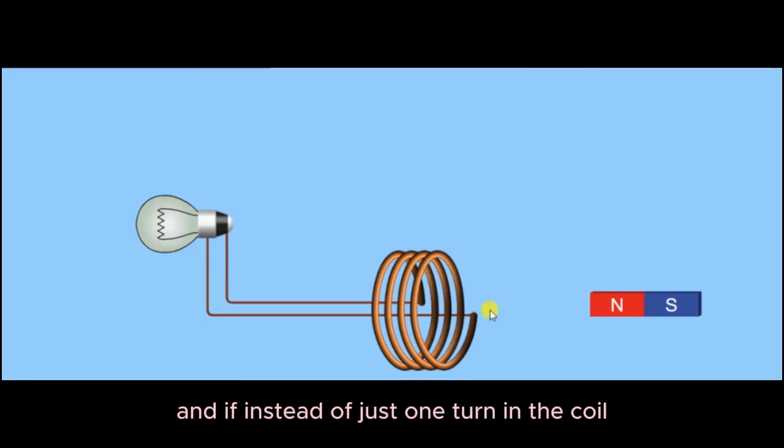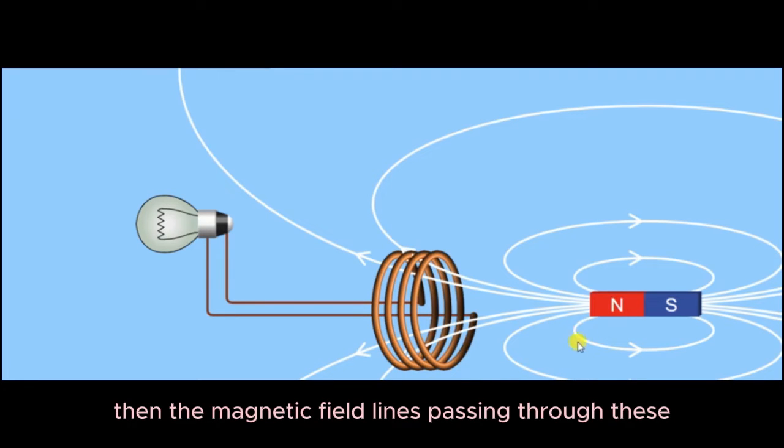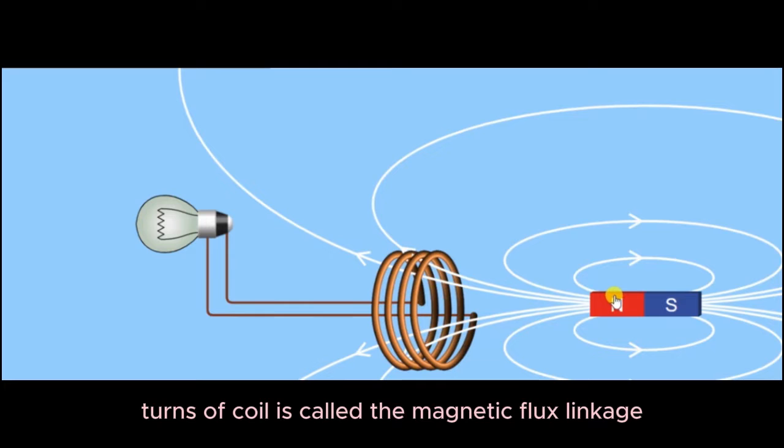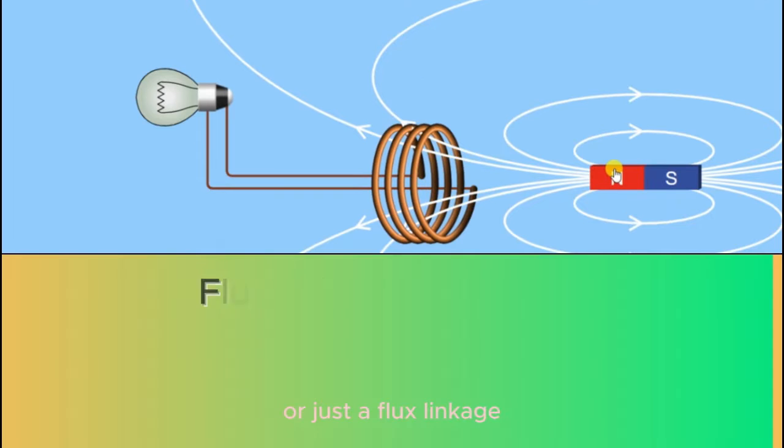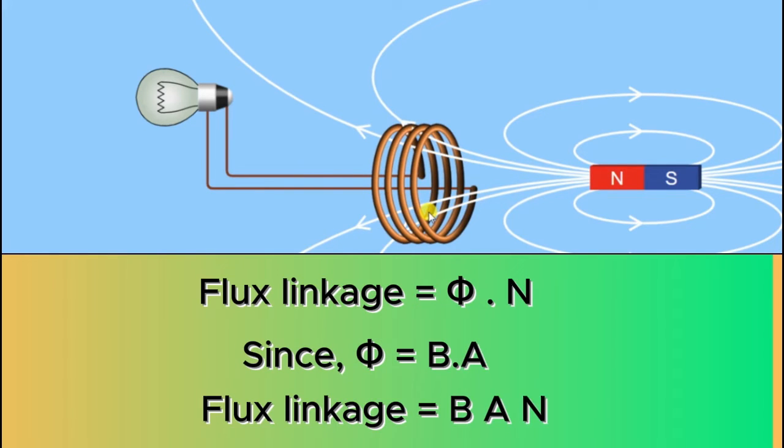And if, instead of just one turn in the coil, you have a number of turns in the coil of wire, then the magnetic field lines passing through these turns of coil is called the magnetic flux linkage, or just the flux linkage. And hence, flux linkage then could be defined as the magnetic flux phi times the number of turns.